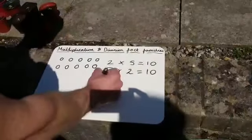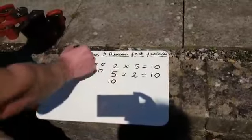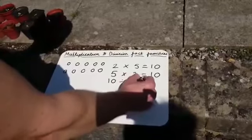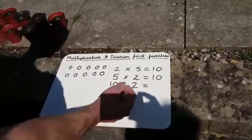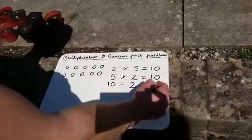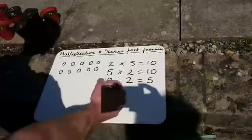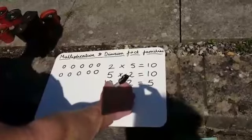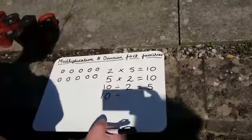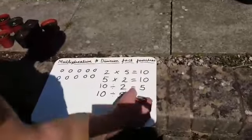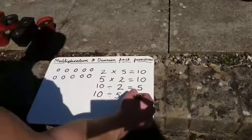We can do 10, which is what I have here, divided by 2, or shared into 2 groups, equals 5. And I can also do another one. I can do 10 divided by 5 equals 2.